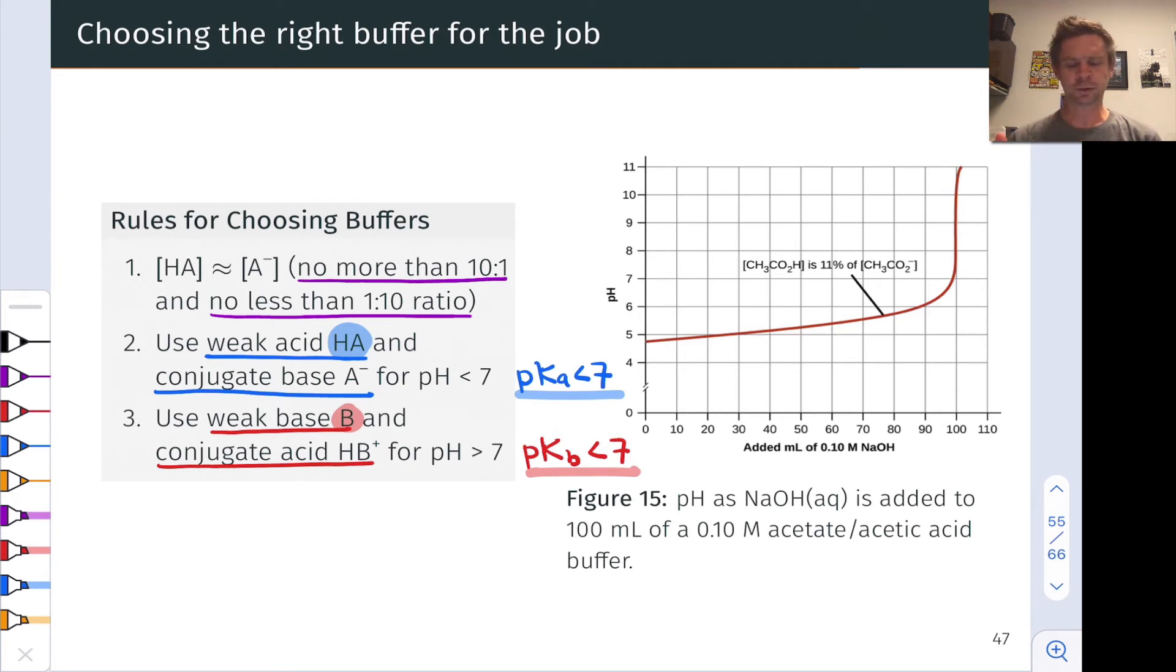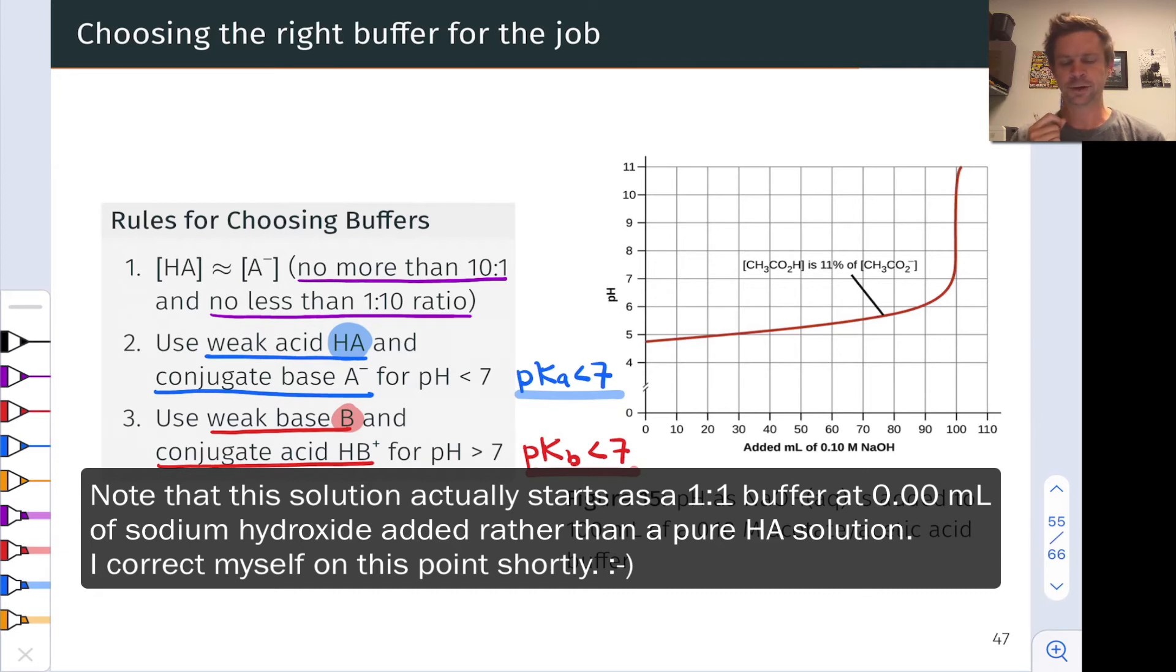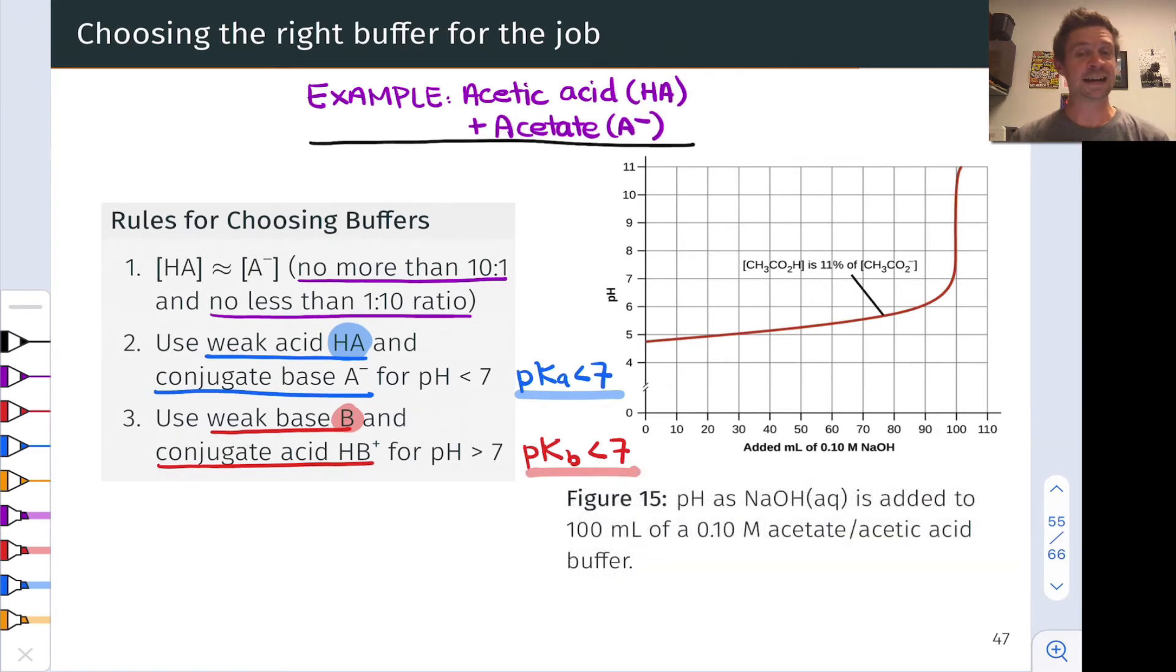As an example, let's take a look at this curve on the right, which shows the pH of an acetic acid solution as we add sodium hydroxide to it. This is the beginnings of a titration curve, which we'll revisit in more detail in a future section. As we add sodium hydroxide, the acetic acid will react with the hydroxide in a proton transfer process to produce acetate, building in a mixture of the weak acid and its conjugate base.